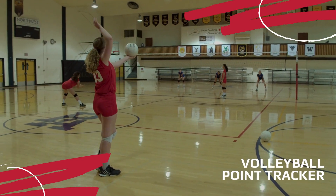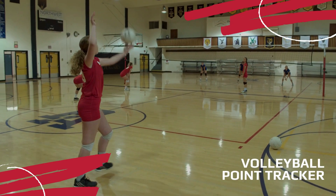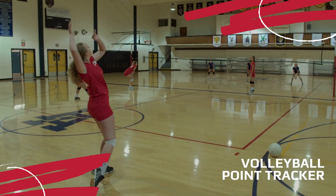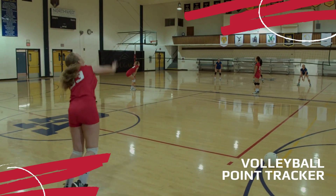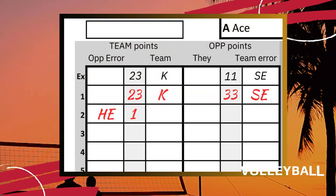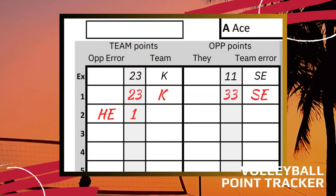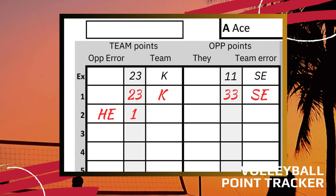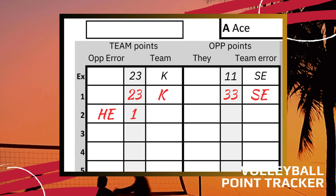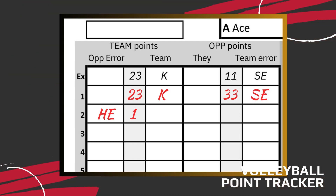Now our team is still serving, but player number 33 makes a serving error, so we will mark the point in the opponent's column 6 as SE for serving error, then place the player's number 33 in the fifth column — all on row 1 as this is the first point for the opponent. Score is 2 for us and 1 for our opponent.